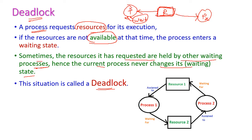In this diagram, we have two processes — process 1 and process 2. For executing process 1, it requires two resources: resource 1 and resource 2. Simultaneously, process 2 also requires the same resources. Here, resource 1 is assigned to process 1 and resource 2 is assigned to process 2.